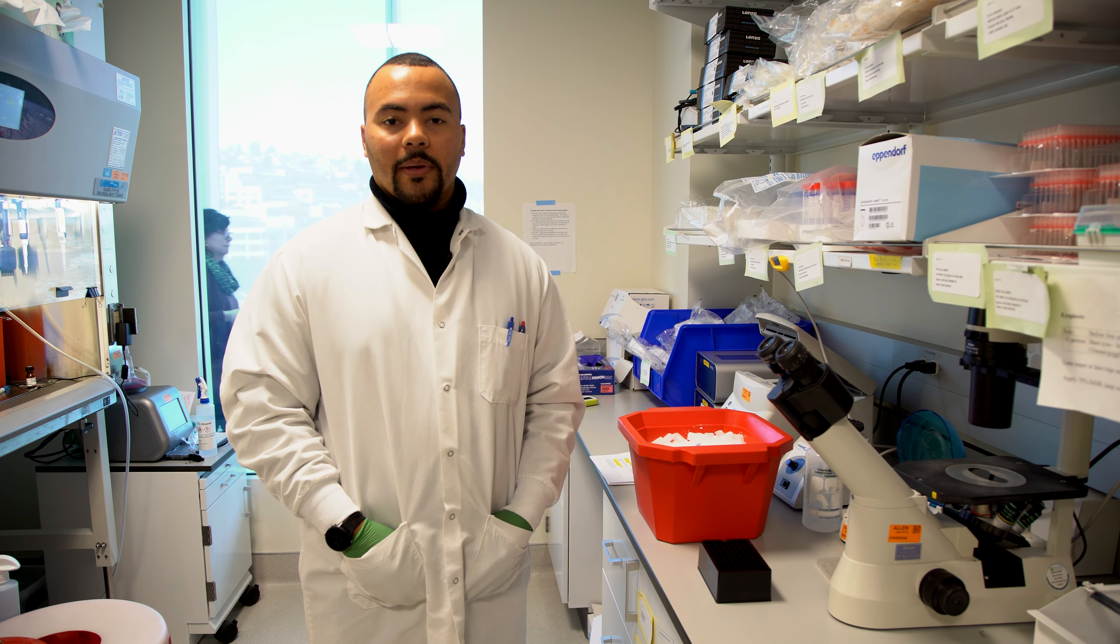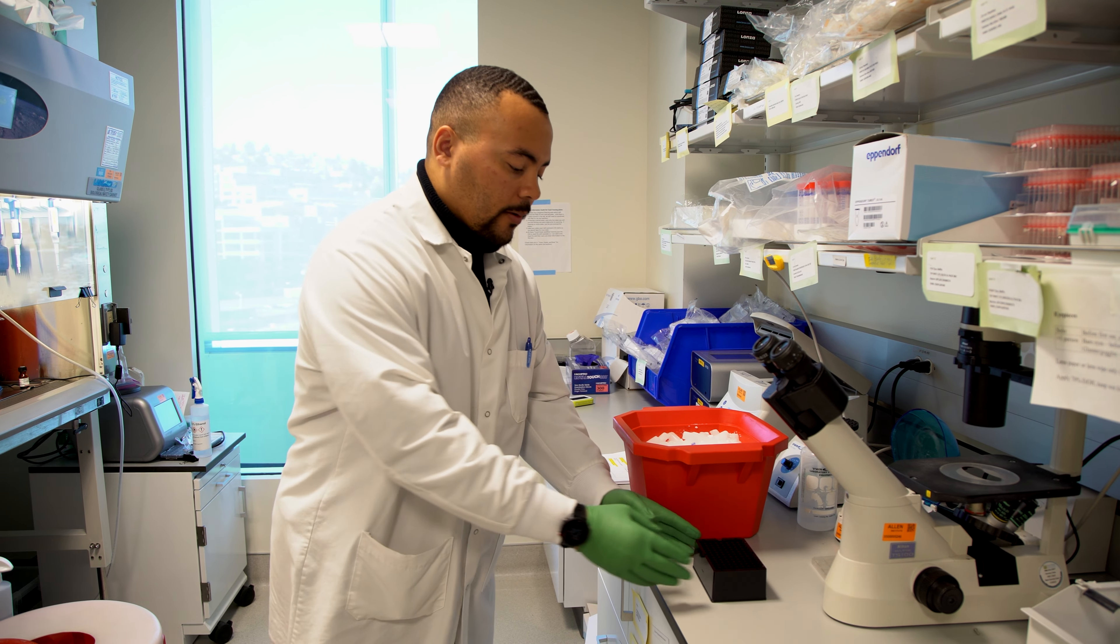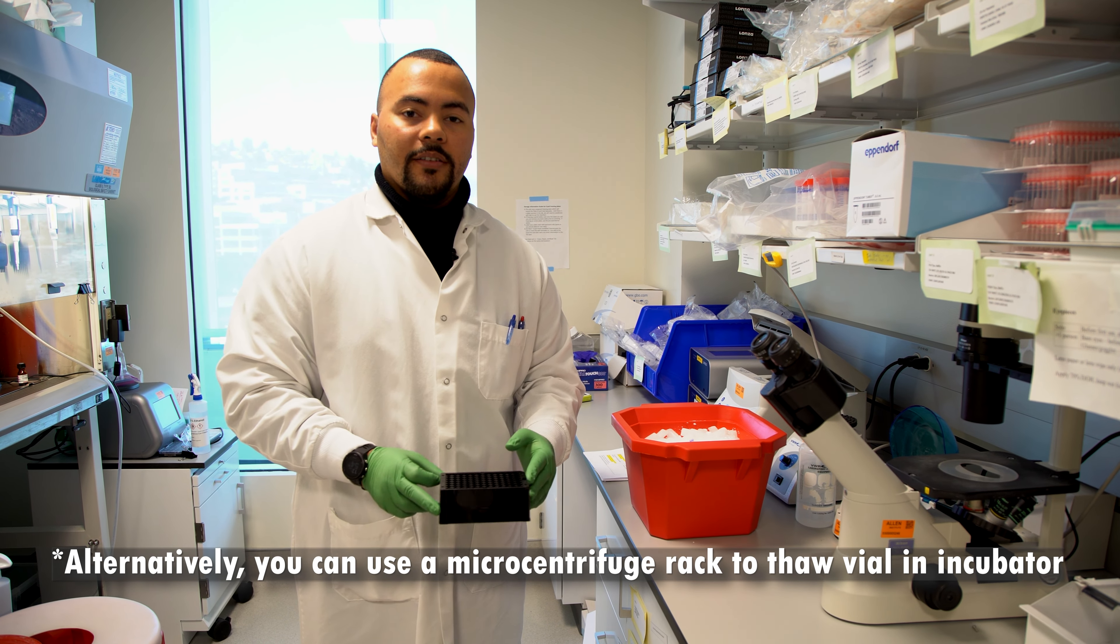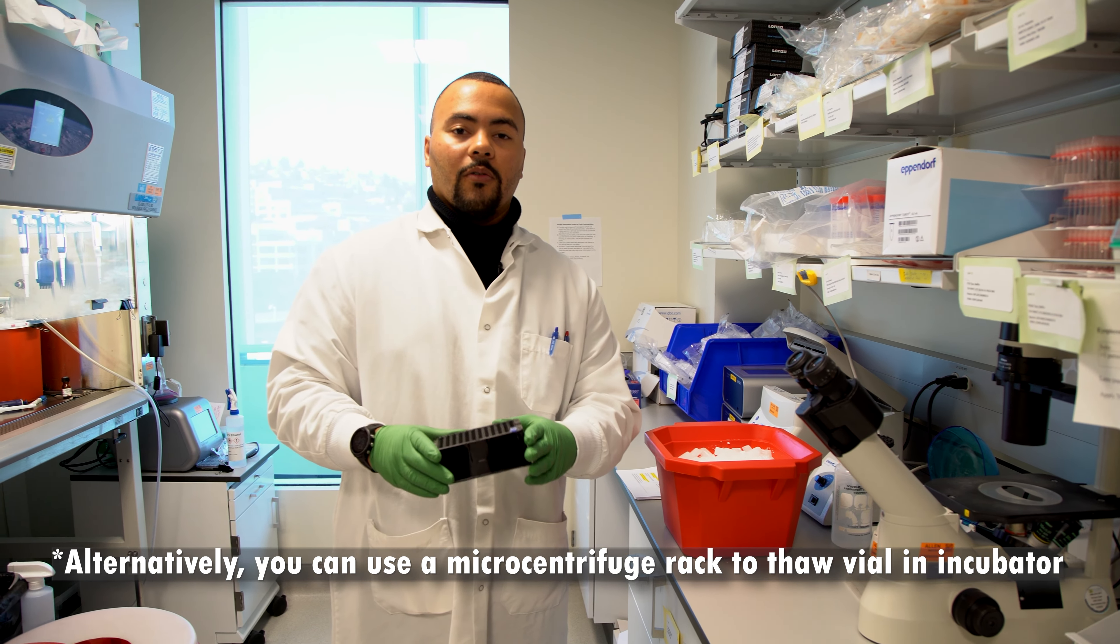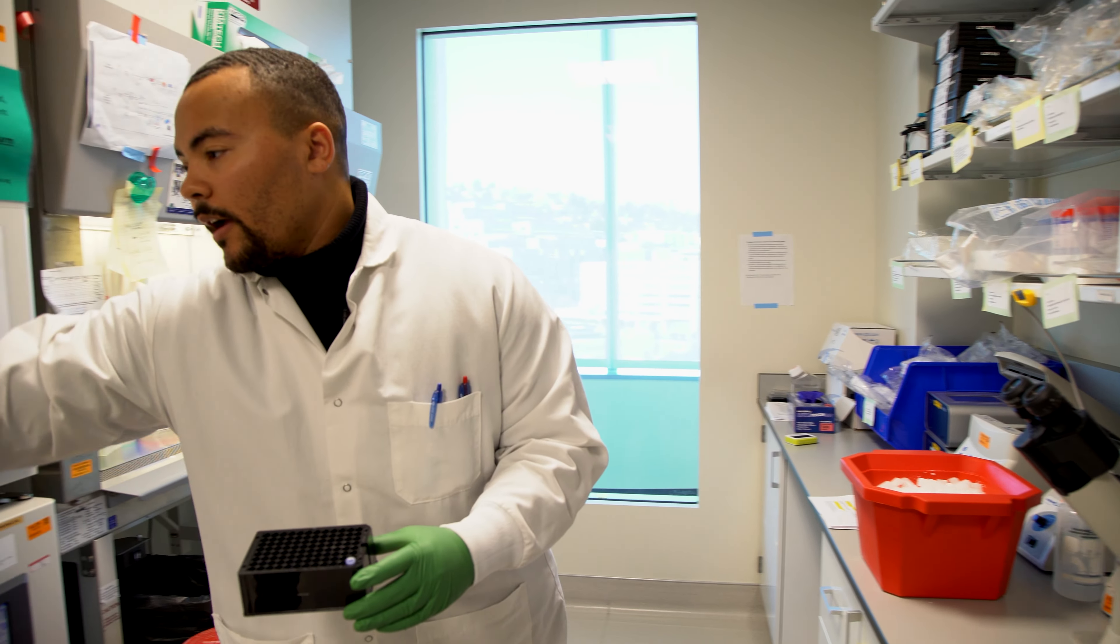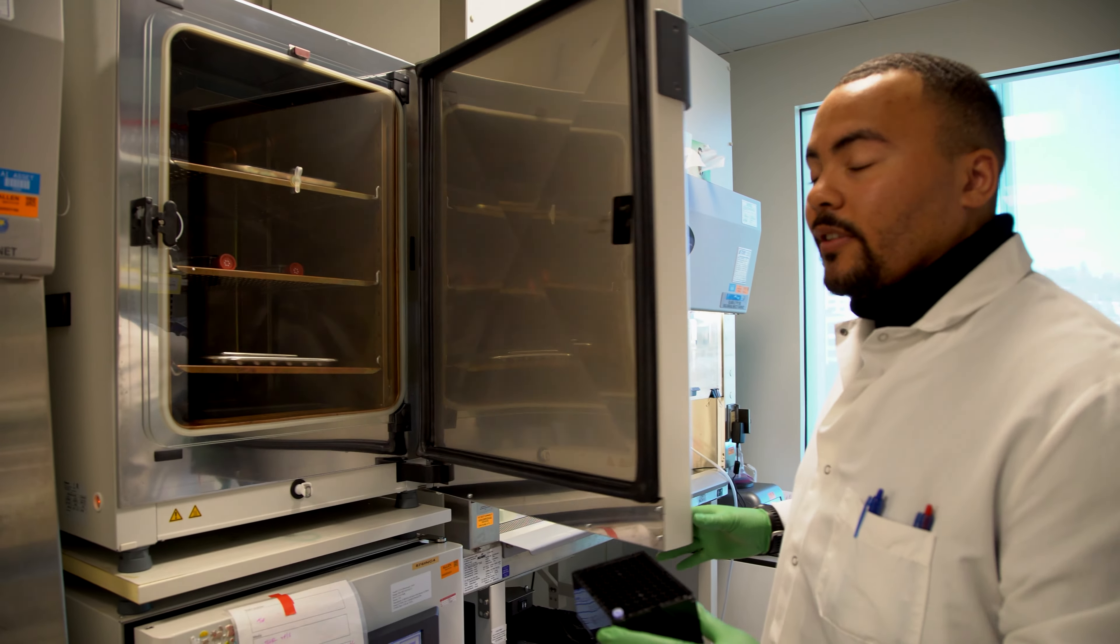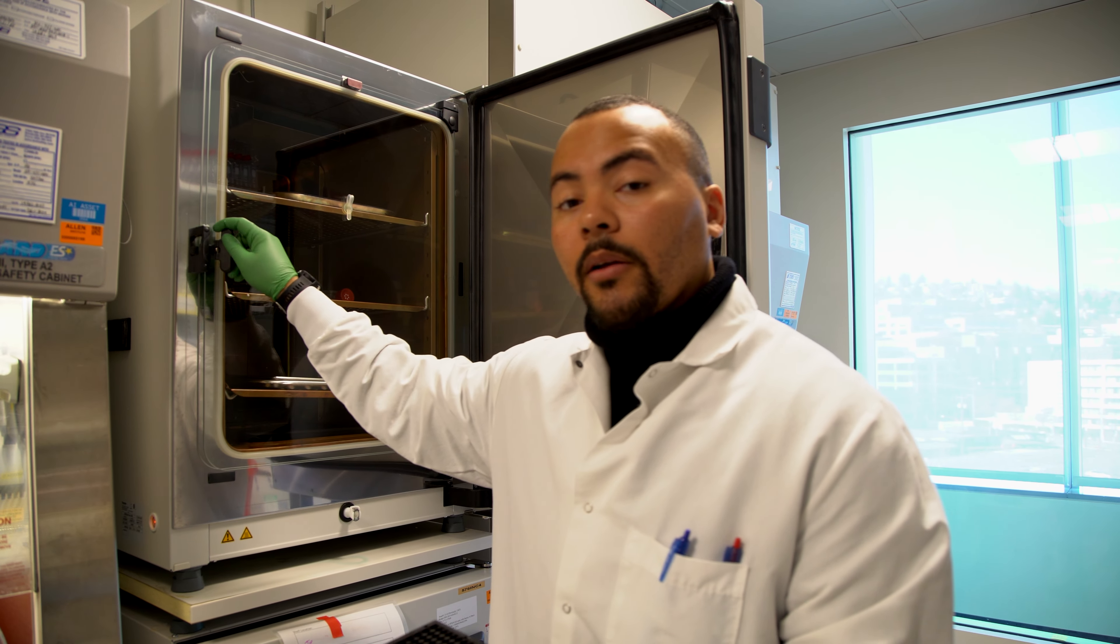Now that we're back in the lab, we can begin thawing our cells. To do that, we'll need a rack to hold our cells while they sit in our incubator. Remove the cells from the dry ice and place into a rack like this. After that, move the cells into a 37 degree Celsius incubator for about 3 to 8 minutes.